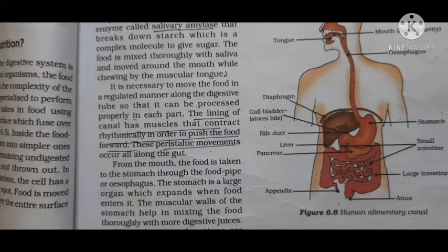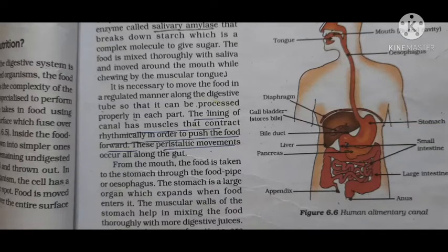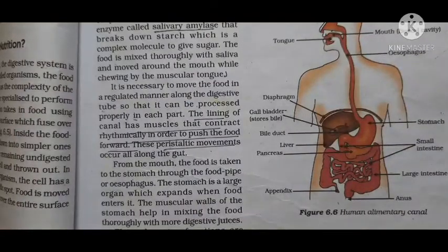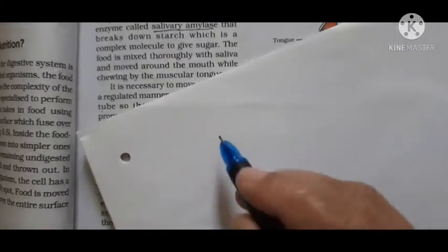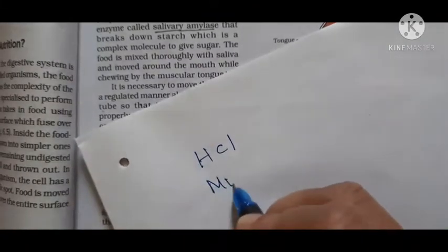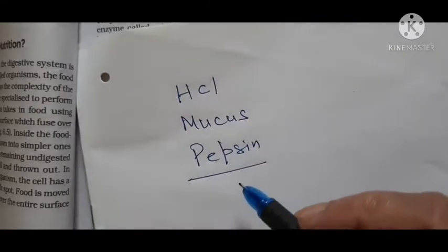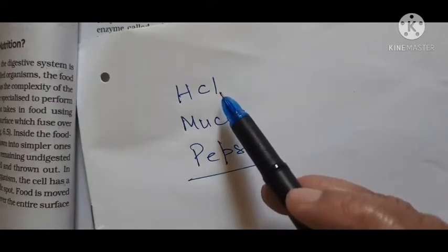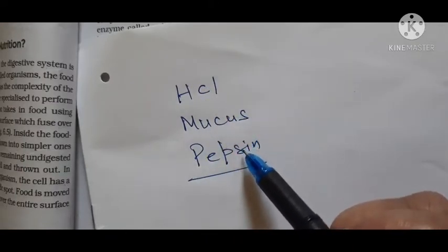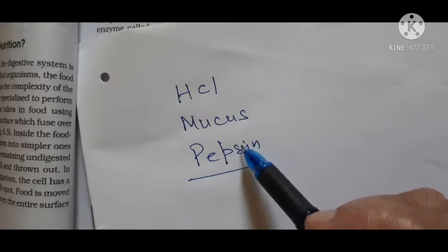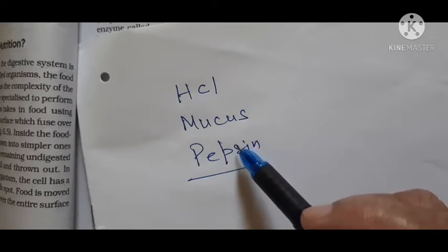Students, don't hesitate to WhatsApp the answer if any question is asked — it doesn't matter if the answer is wrong. Now, the food reaches the stomach, and gastric juice contains three things: hydrochloric acid (HCl), mucus, and pepsin. Pepsin is an enzyme that is inactive by default — it only acts when the food is acidic. HCl makes the food acidic, thereby activating pepsin, which then digests protein.